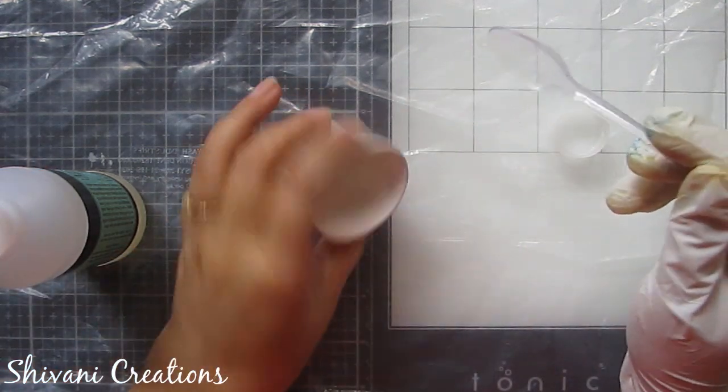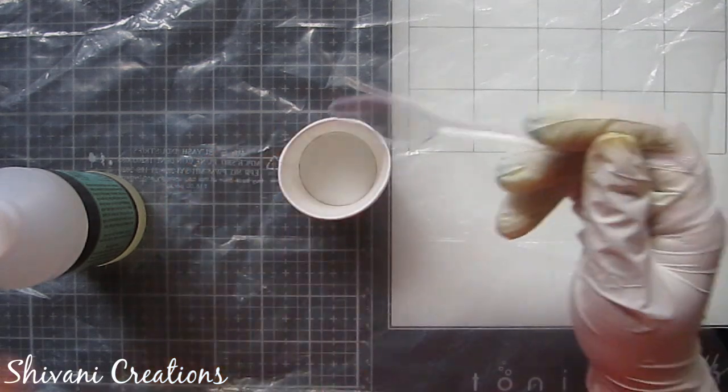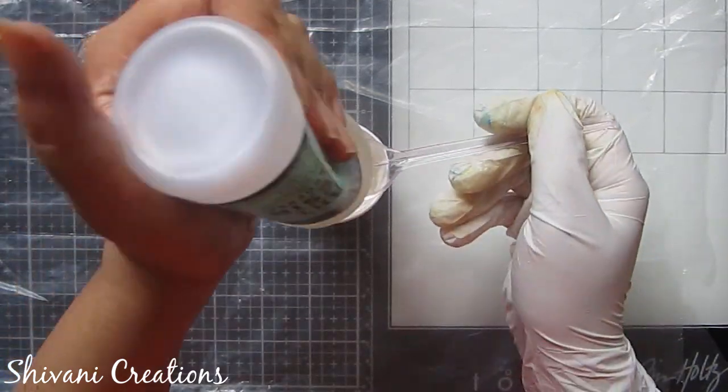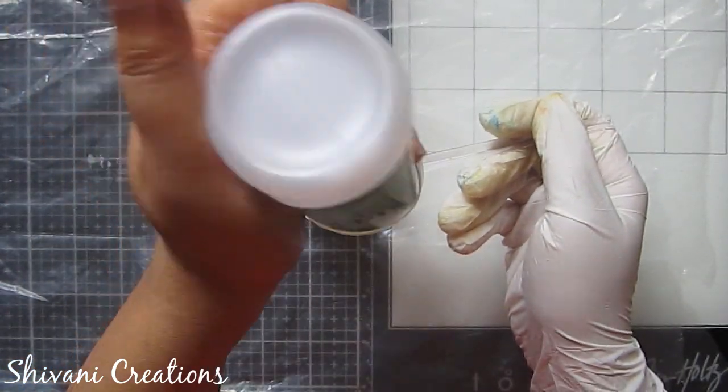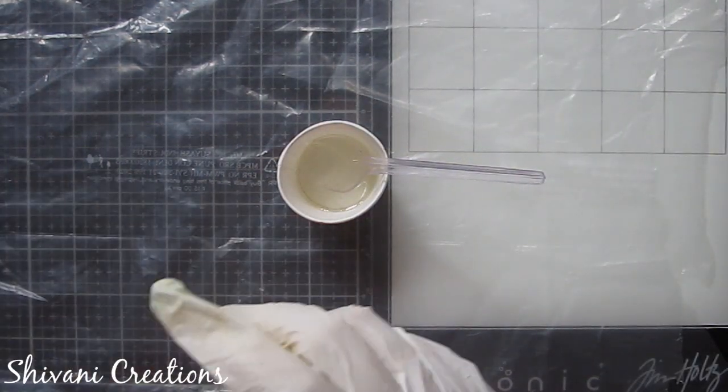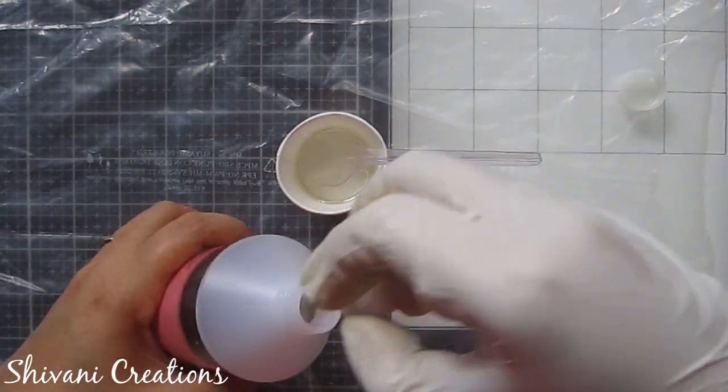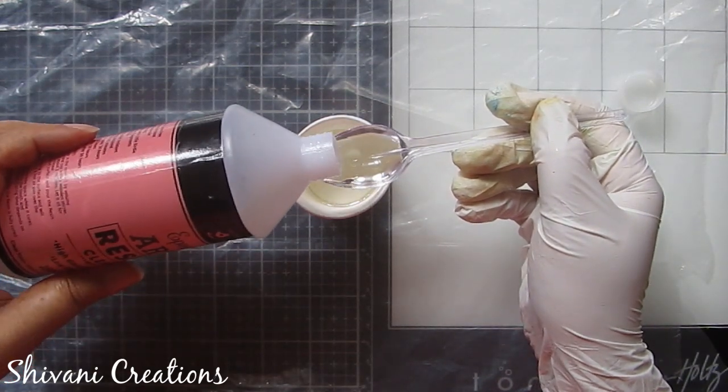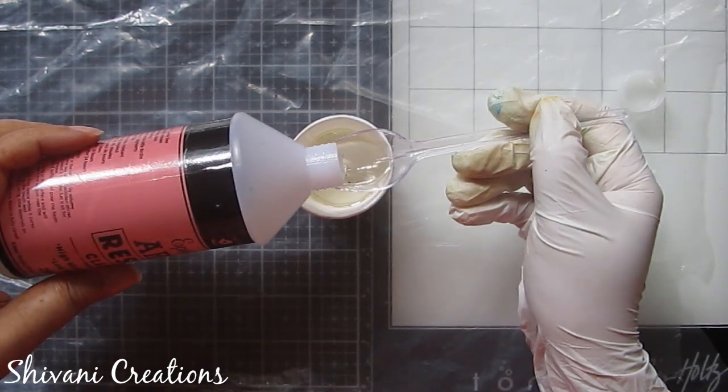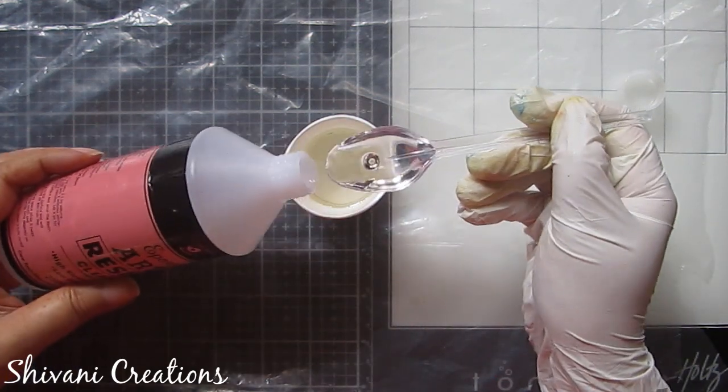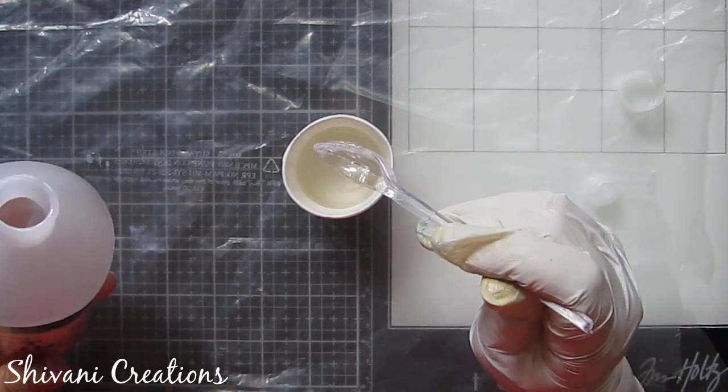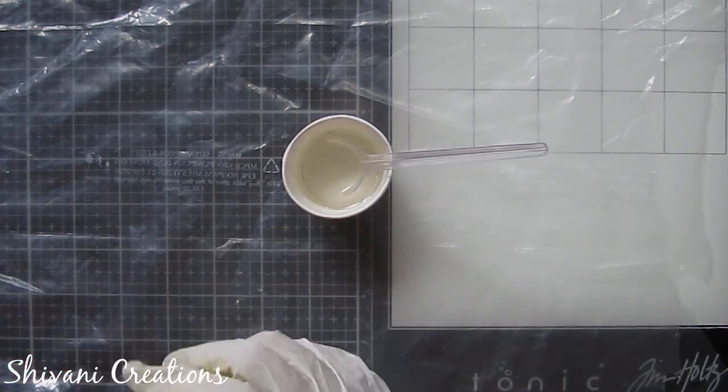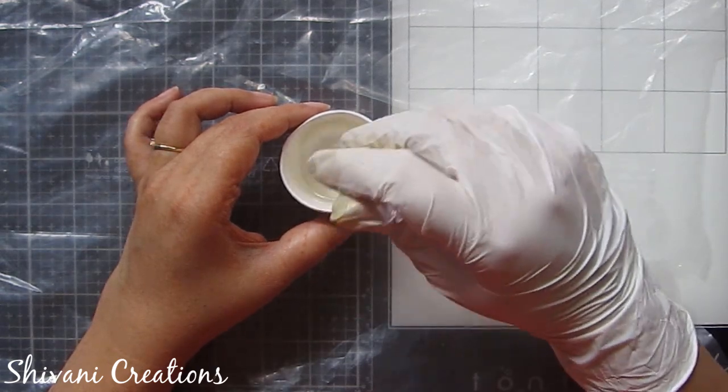Now it's time to make the mixture of resin and hardener. I will pour four tablespoons of clear resin. So this is the resin by Little Birdie and it works in one to two ratio. So one part of hardener and two parts of clear resin. You need to wear gloves and mask while working with resin and your room should be properly ventilated. And also keep wet wipes handy with you.